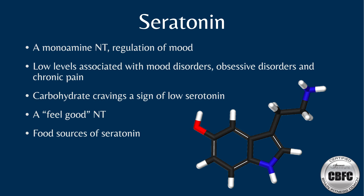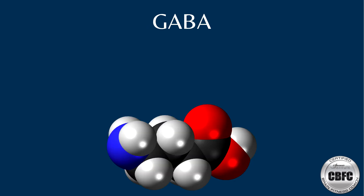Many causes can lower serotonin, including a tryptophan-deficient diet. Stress and high cortisol levels can increase the activity of an enzyme that breaks down serotonin. Excess inflammation can stimulate enzymes that break down tryptophan, a precursor to serotonin. Blood sugar imbalances or insulin resistance also impact serotonin levels. Vitamin B6 deficiency — important in converting tryptophan to serotonin — and magnesium deficiency can also prevent the body from making adequate levels of serotonin.